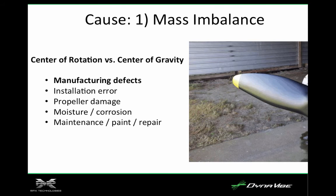This is another example of a mass imbalance — actually a manufacturing defect. If you look at the blade, there are two images superimposed, and they're alternating. You can see very subtle differences in the shape of the blade. During manufacturing, in order to get the mass correct, they actually took some material off, so it gives you both a mass error and an aerodynamic error.